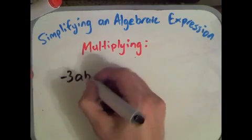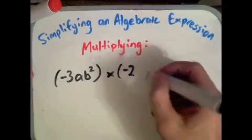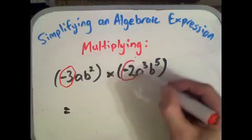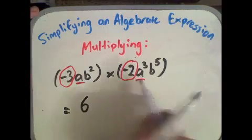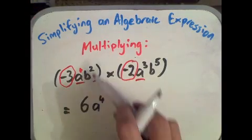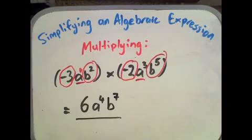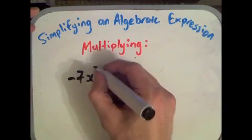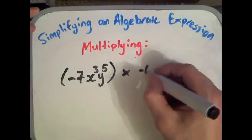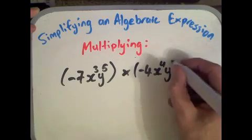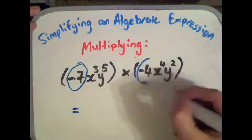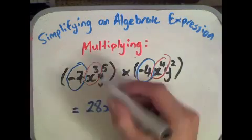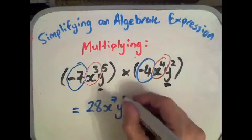Next example: negative 3ab squared multiplied by negative 2a cubed b to the power of 5. Negative times negative gives us a positive, so 3 times 2 is positive 6. Then a times a cubed is a to the 4, and b squared times b to the 5 is b to the 7. Next: negative 7x cubed y to the power of 5 multiplied by negative 4x to the 4 y squared. Negative 7 times negative 4 gives positive 28; x cubed times x to the 4 is x to the 7; y to the 5 times y squared is y to the 7.